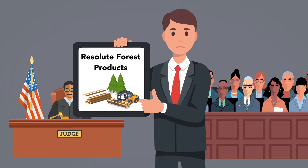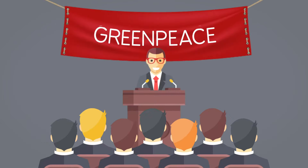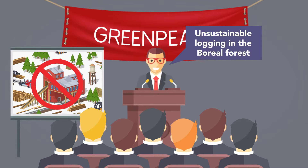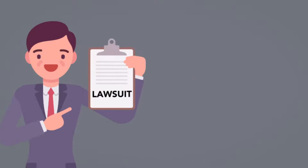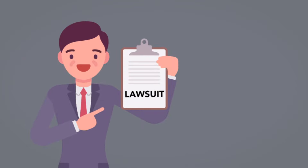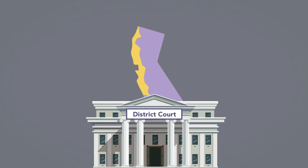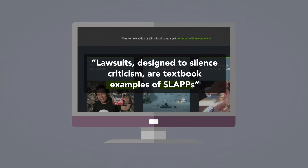For example, a multinational logging company called Resolute Forest Products brought a 2016 lawsuit against Greenpeace in response to a Greenpeace public relations campaign aimed at stopping what it considered unsustainable logging in the boreal forest. The lawsuit alleged defamation, fraud, and even racketeering. Greenpeace has also been sued over its campaign against the Dakota Access Pipeline. A district court in the Northern District of California found that it qualified as a SLAPP suit, enabling remedies that included dismissing its claims. Greenpeace has alleged on its website that such lawsuits designed to silence criticism are textbook examples of SLAPPs.